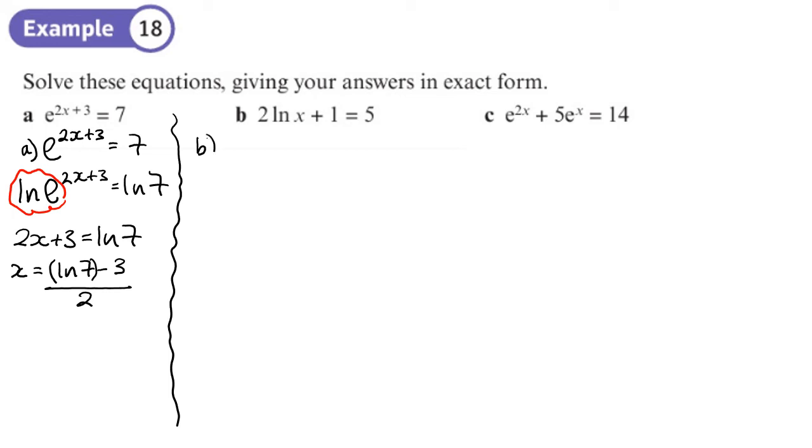Part b. So we've got this 2 log x plus 1 equals 5. So first of all, let's move the one over. So we've got four, take away one from both sides. Now the two, we want to make a power like this. Or we could have divided both sides by two, I suppose. Let's do that instead.